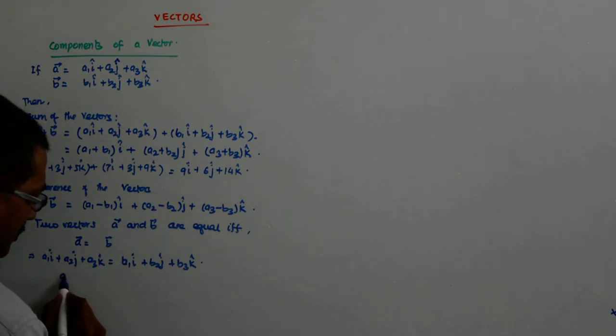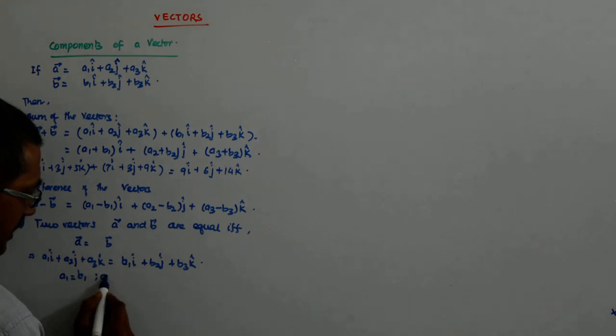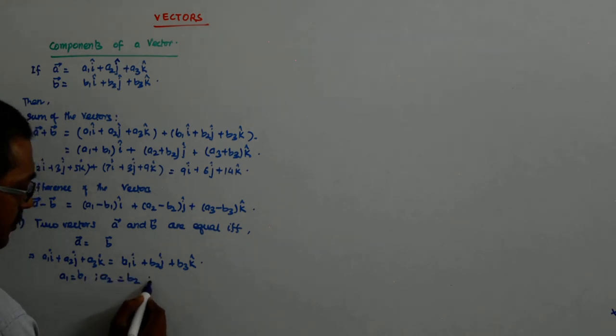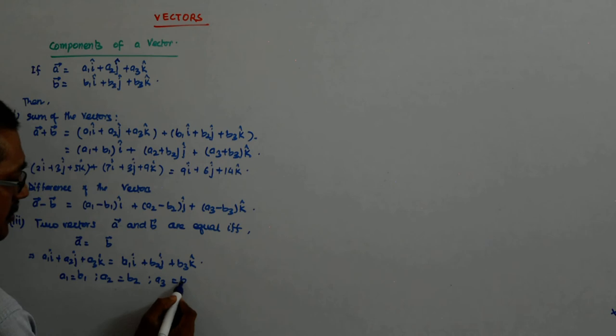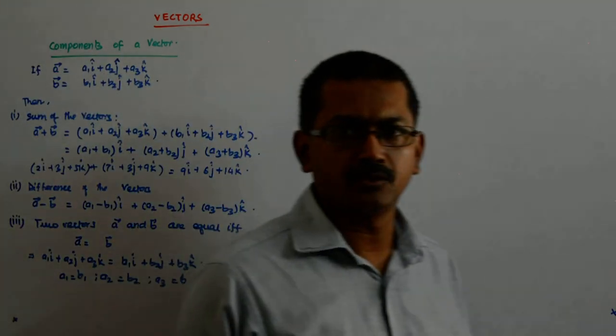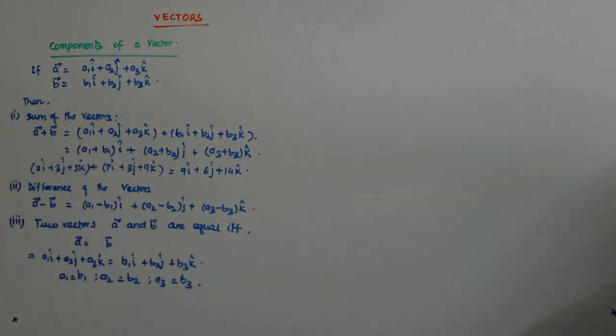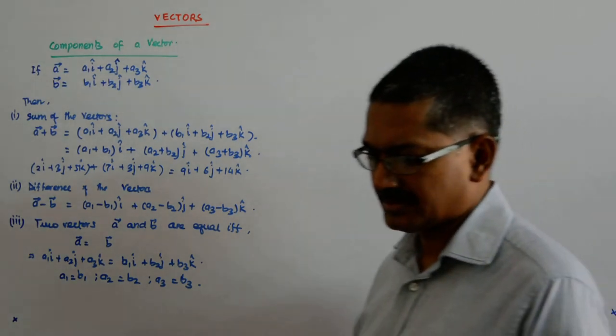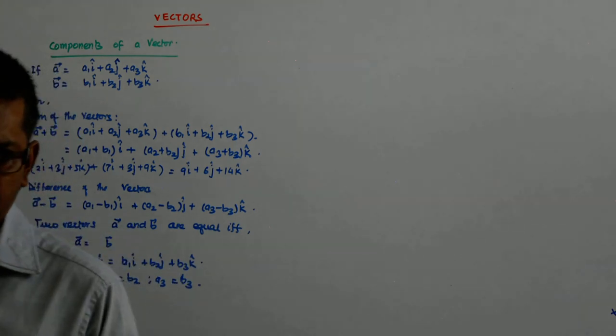So, A1 is equal to B1, A2 is equal to B2, A3 is equal to B3. So, when their respective coefficients are equal, then and then only the vectors will be equal. That is something that we have to understand.